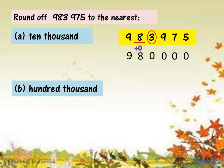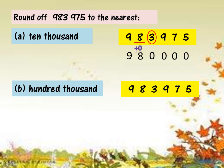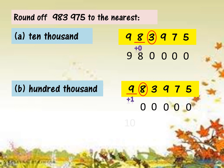Round off 983,975 to the nearest 100,000. Copy down the number. Underline 100,000 — count from the back: 1, 10, 100, 1,000, 10,000, 100,000 — that's digit 9. Circle the number on the right: 8. Ingat balik gambar bukit — 8 is in the 5–9 range, so plus 1. After 100,000, all change to 0. 9 plus 1 gives 10. Kali ini kita boleh tulis 10 terus, sebab di depan 9 tak ada lagi digit yang lain. So the answer is 1 million.